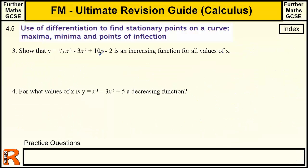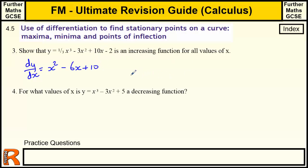Question 3 is about increasing and decreasing functions. If a function is increasing for all values of x, its gradient is always positive; if decreasing for all values, the gradient is always negative. Differentiating the function gives dy/dx = x² - 6x + 10. To prove it's always increasing, we need to show this quadratic is always above zero. Since it's a U-shaped quadratic, we can find its minimum point to show it's always positive.